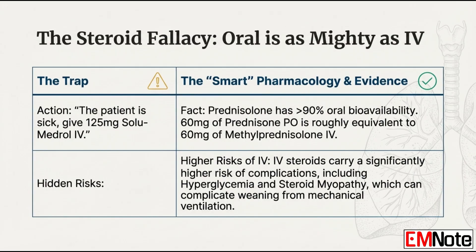By using oral steroids we avoid significant risks that come with IV use — particularly uncontrolled hyperglycemia and steroid myopathy, meaning severe muscle weakness. This is critical in this population because these patients are often right on the edge of needing mechanical ventilation. If they develop steroid myopathy, their respiratory muscles get weaker, making it much harder to wean them off the ventilator — leading to longer ICU stays, more pneumonia, and worse outcomes overall.